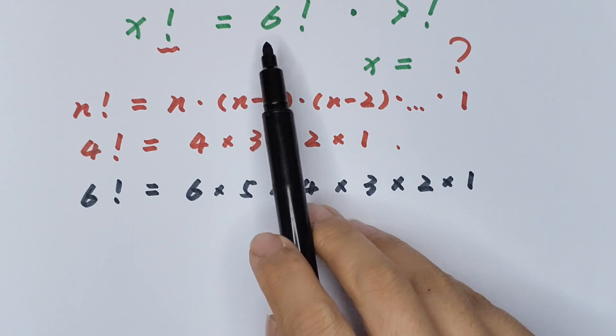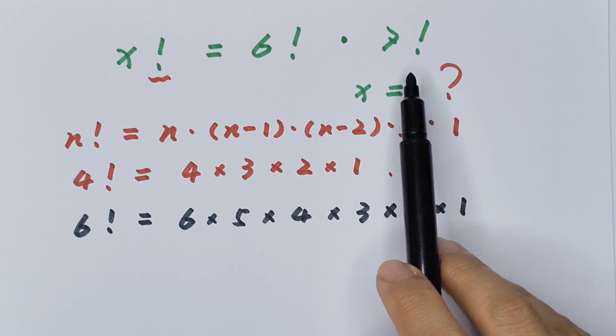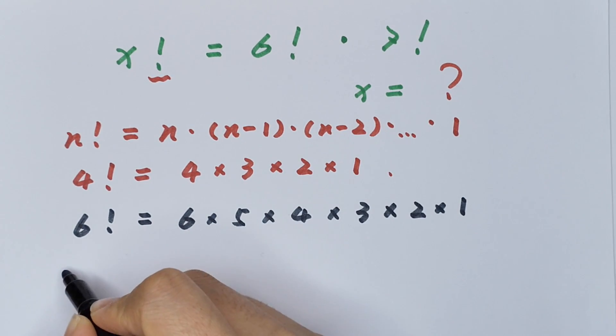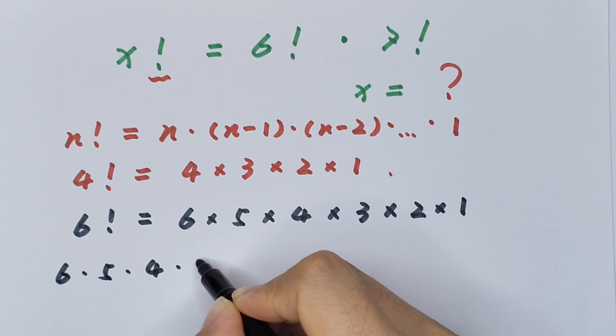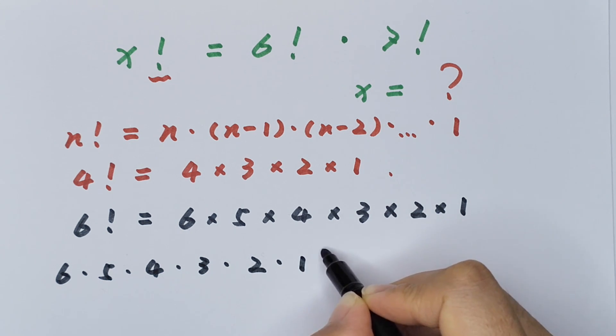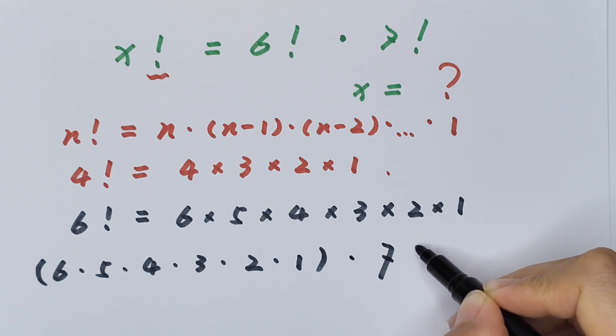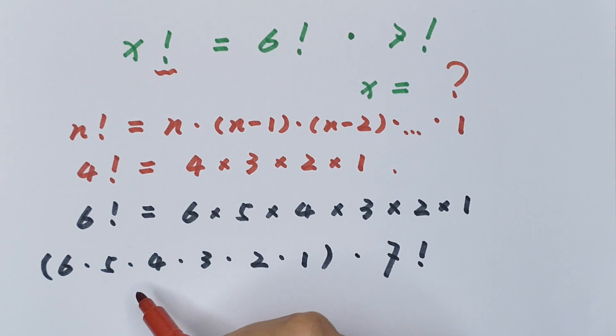So 6 factorial times 7 factorial can be written as 6 times 5 times 4 times 3 times 2 times 1, times 7 factorial. Now look at this.